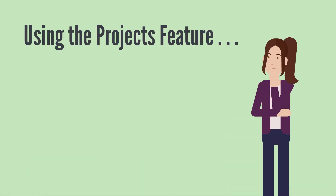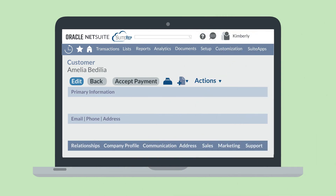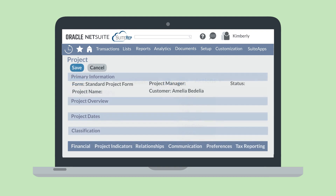What does using the NetSuite Projects feature look like in practice? The first step in using this feature is to create project records. With only the basic Projects feature enabled, you will need to create a project record directly from a customer record. On a customer record, access the Create New drop-down list and select Project from the list. Doing this will open up a new project record that is auto-filled with the customer's name and things like the subsidiary and primary currency that are associated with that customer.